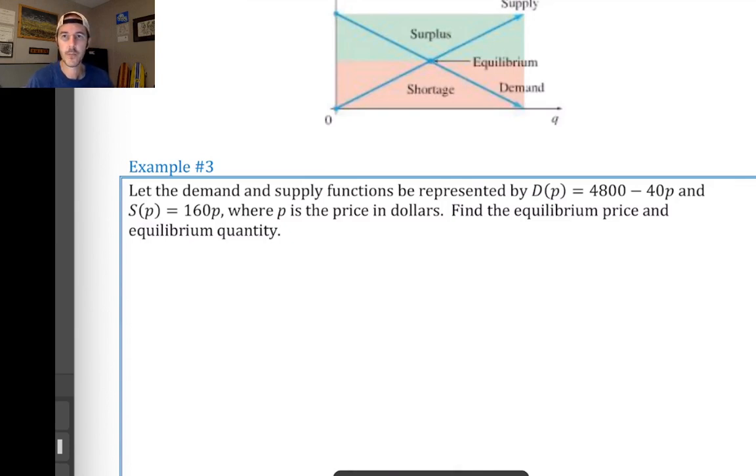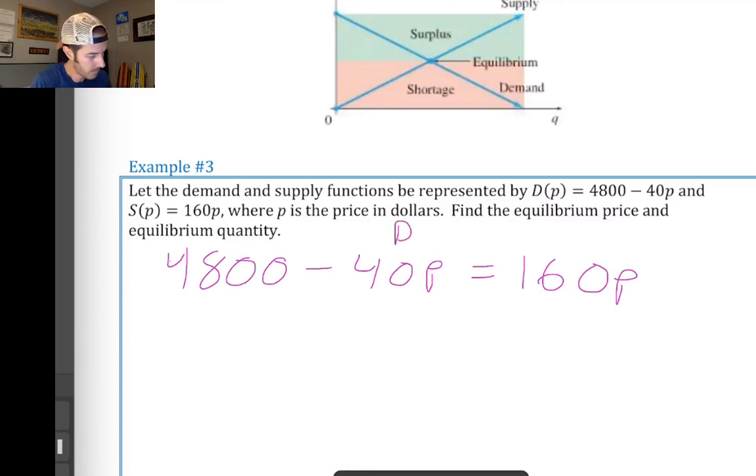So, here we have two functions given to us. The first one is a demand function, d of p and the supply function s of p. And p is represented in dollars here and represents price. In order to find the equilibrium price and equilibrium quantity, we're going to take these two functions and set them equal to each other. So, the math of many of these problems is not going to be particularly difficult, but making sure that you know how to set the problems up is going to be very beneficial because if you don't know how to get the problem started, the problem becomes very difficult right off the bat.